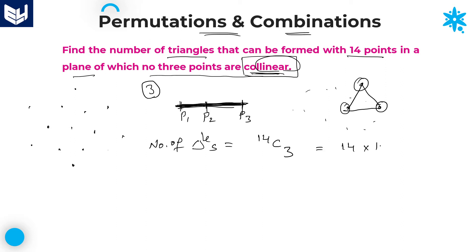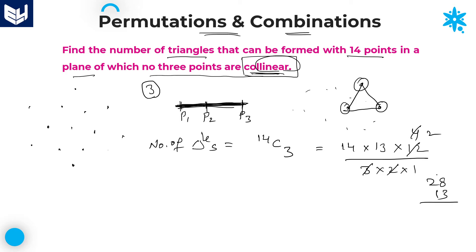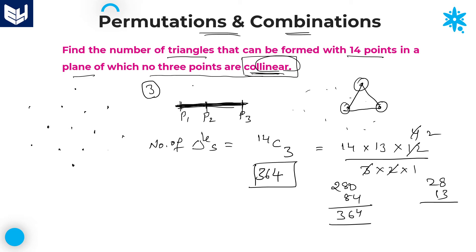We can calculate 14C3 as 14 × 13 × 12 divided by 3 × 2 × 1. Cancelling: 12 divided by 3 gives 4, and 4 divided by 2 gives 2. Then 14 × 2 = 28, and 28 × 13: 28 × 10 = 280 and 28 × 3 = 84, giving 280 + 84 = 364. So 364 triangles are formed.